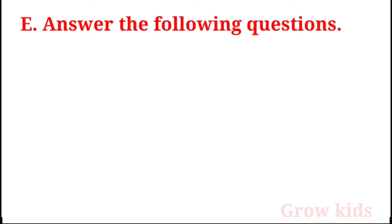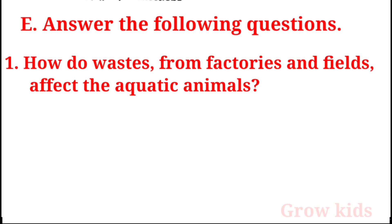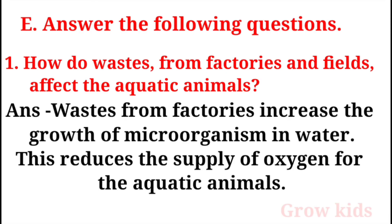Long answer questions. Question 1: How do wastes from factories affect aquatic animals? Answer: Wastes from factories increase the growth of microorganisms in water, which reduces the supply of oxygen for aquatic animals.